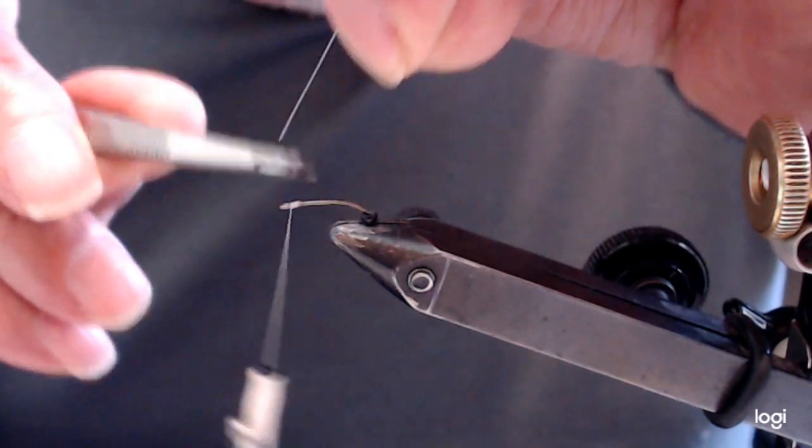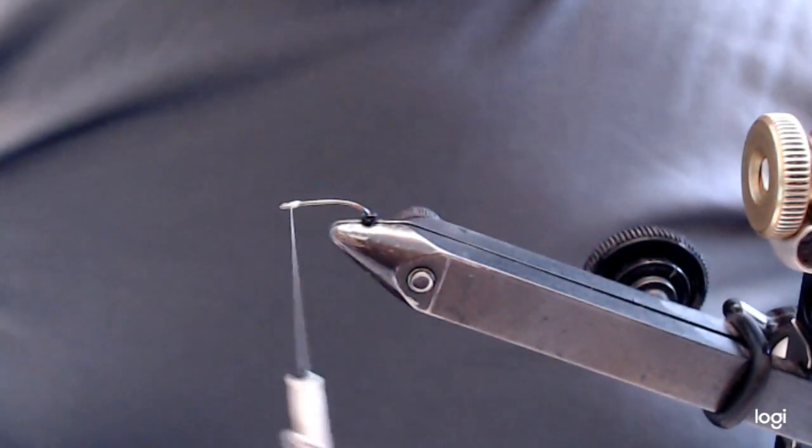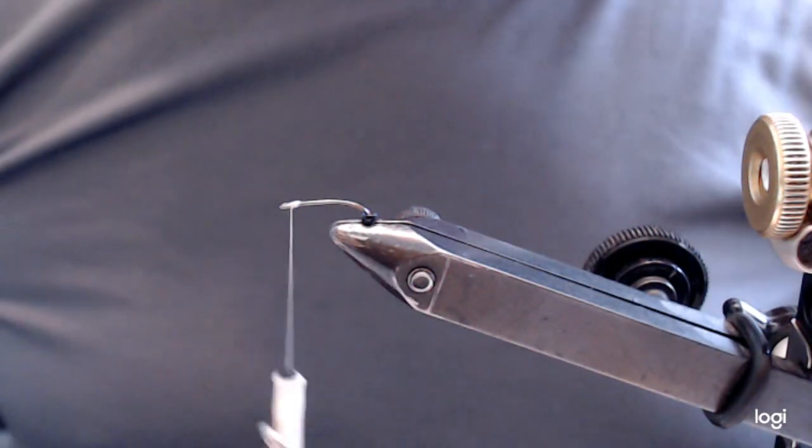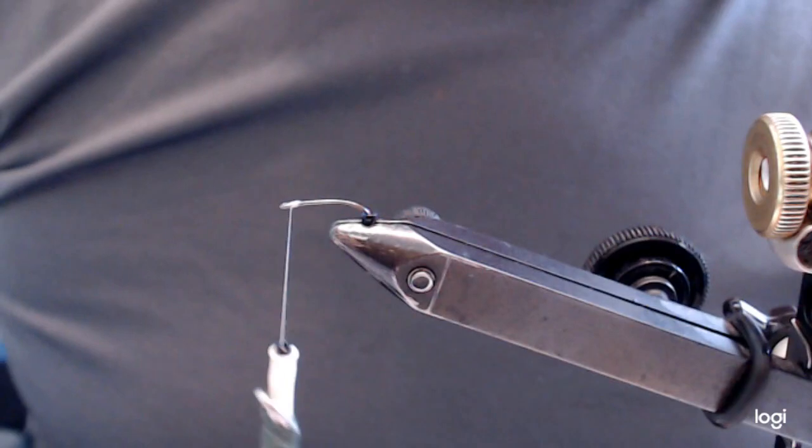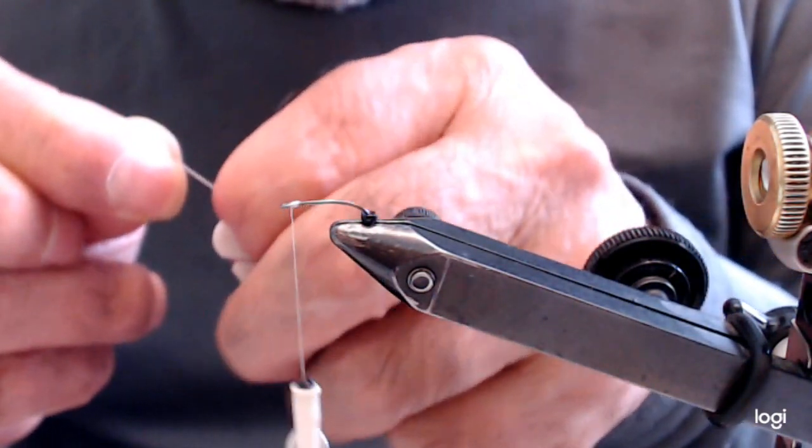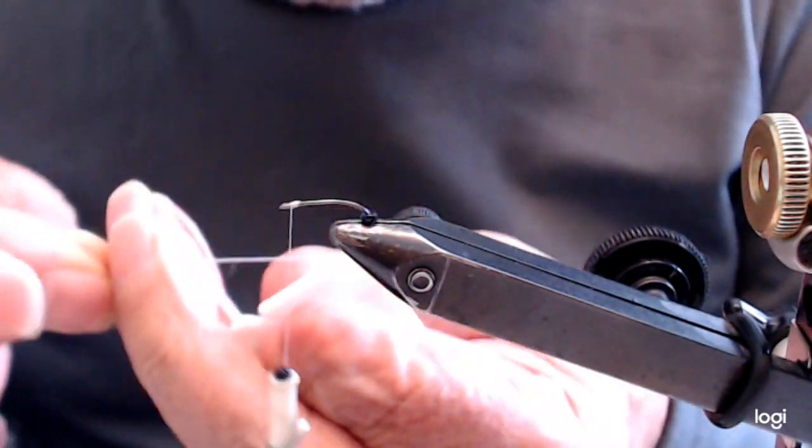When I tie it a little bigger on 14s, then I'll put a little thicker gill. Alright, I'm using a very fine strand of gill material.